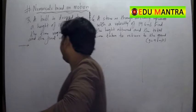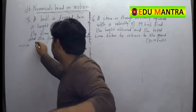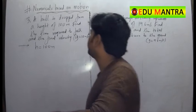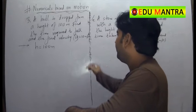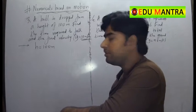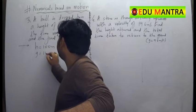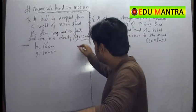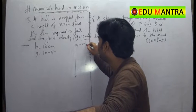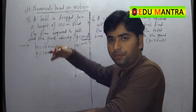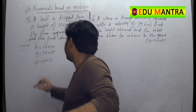Let's write the given part. The height is 100 meters. We are provided with the acceleration due to gravity, which is 10 meters per second squared. The body is dropped, so the initial velocity will be 0 meters per second — it is dropped, not thrown.